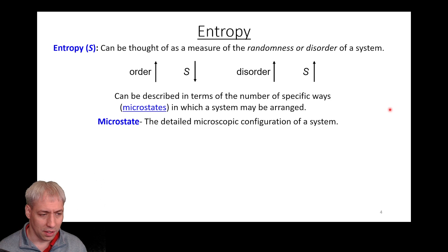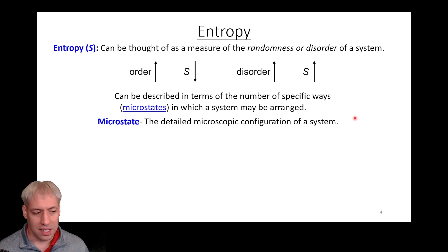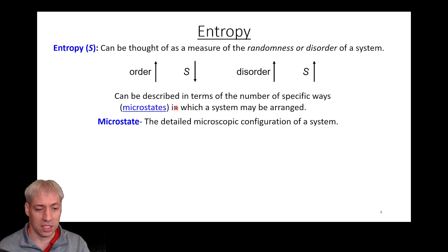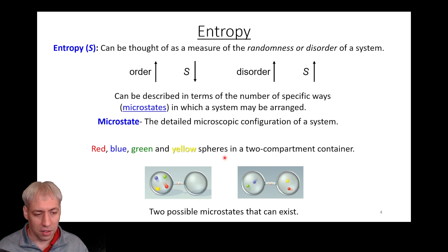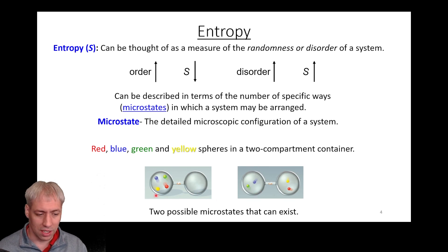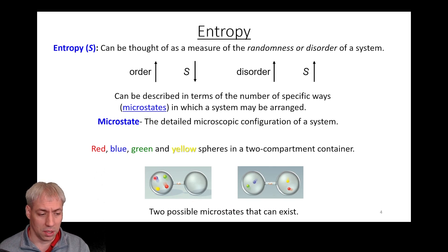Another way to define entropy, at least in terms of statistical mechanics, is the number of microstates that exist. You can think about a system being arranged any number of ways, and those arrangements can be thought of as microstates — basically a detailed snapshot of one given configuration of a system. Millions of these microstates can exist. So we'll take a simple example where we have red, blue, green, and yellow spheres. They can exist in two compartments in a bunch of different ways. We're narrowing this down to the number in each compartment. Here are two possible microstates where it's four and zero, and here it's a two-and-two microstate.